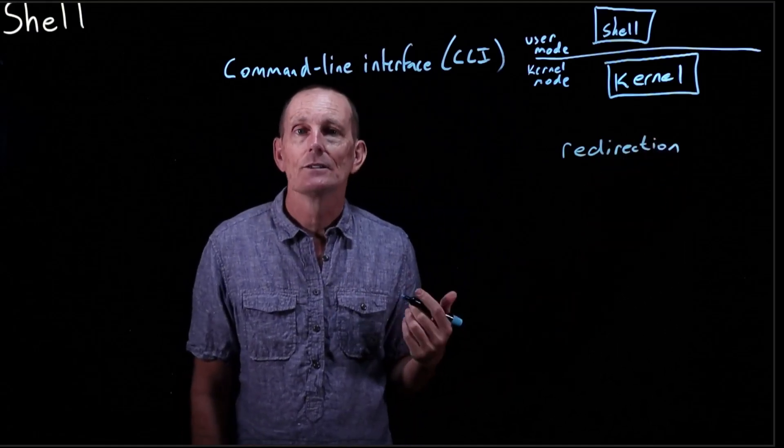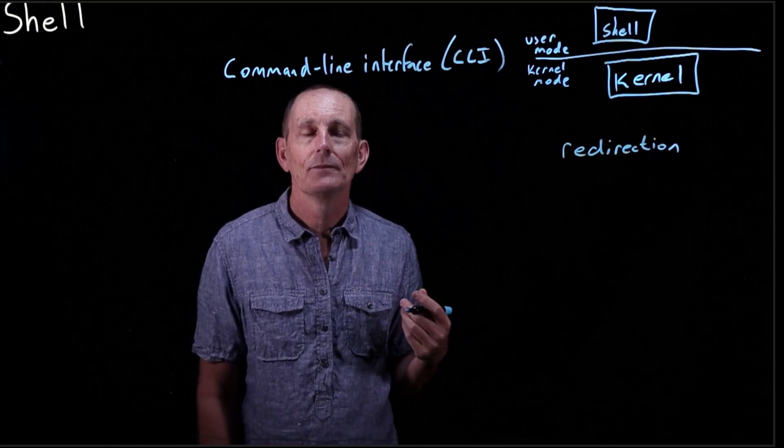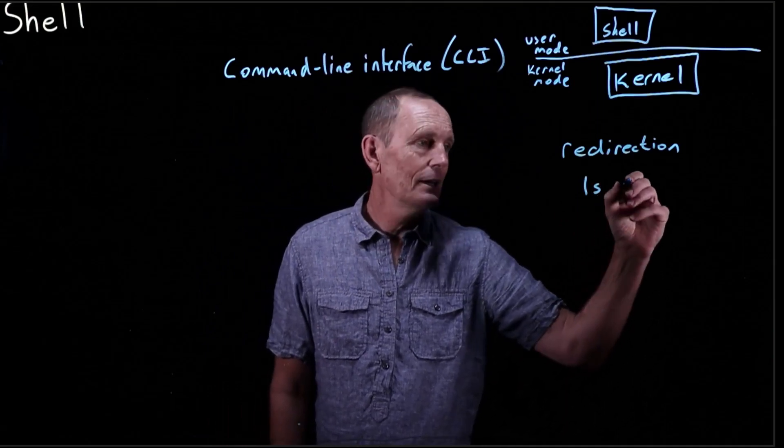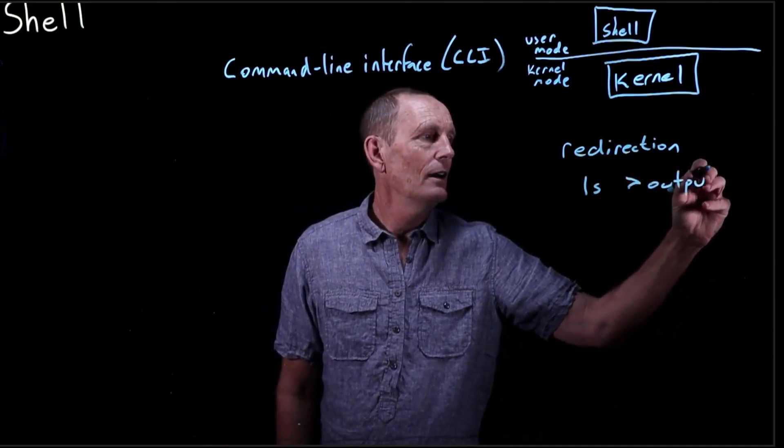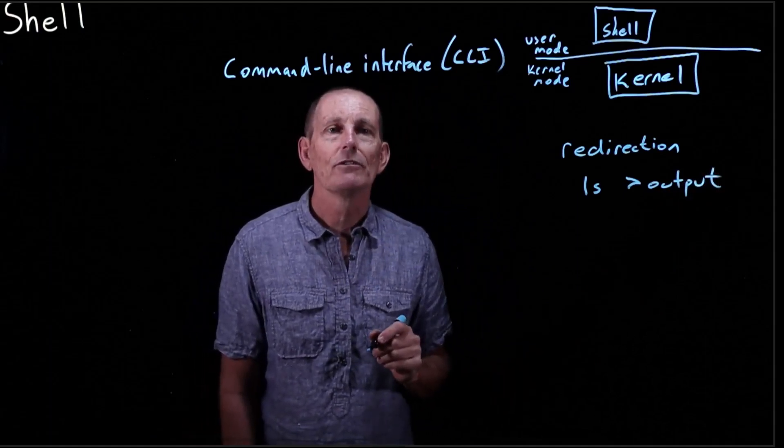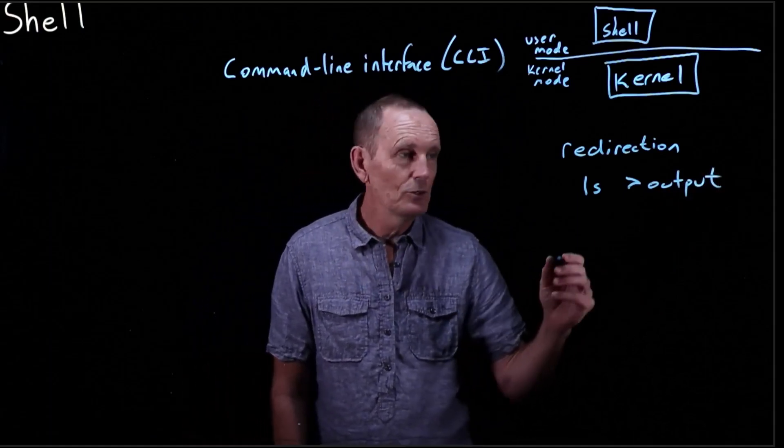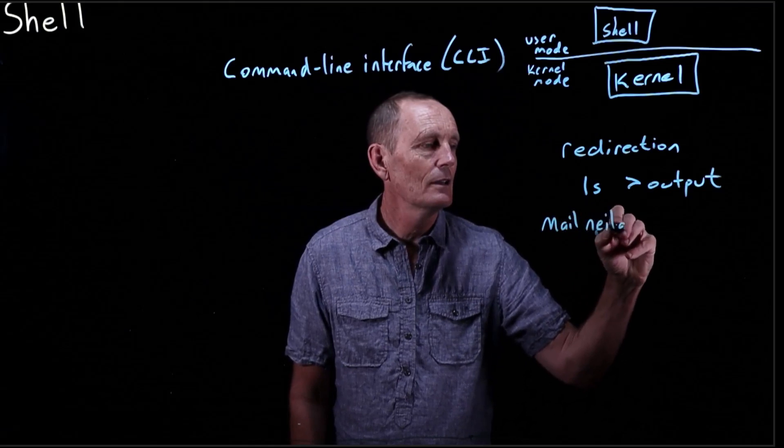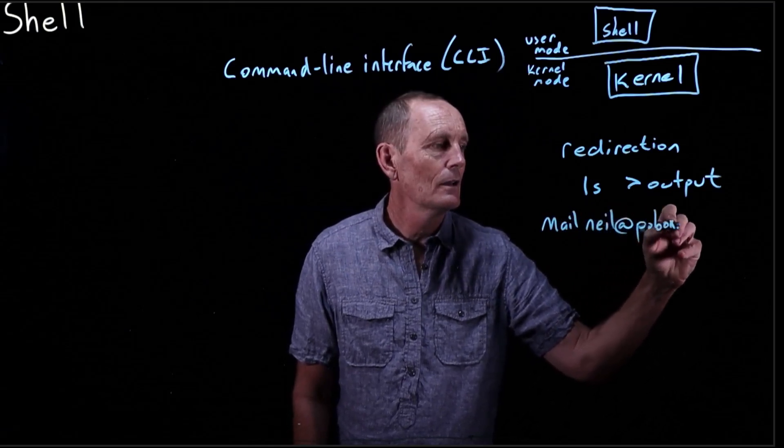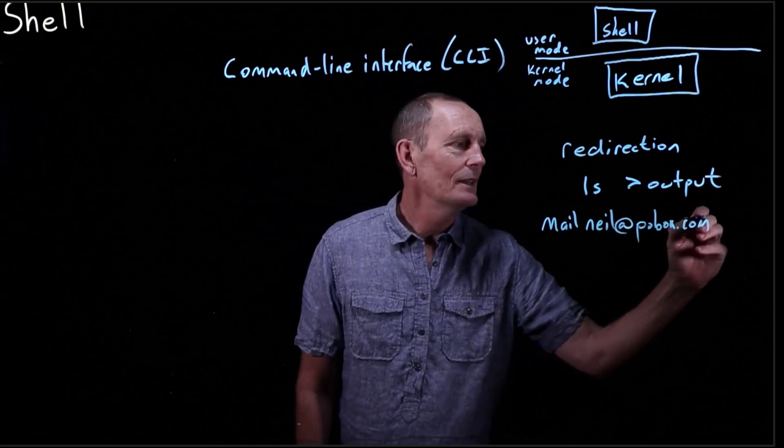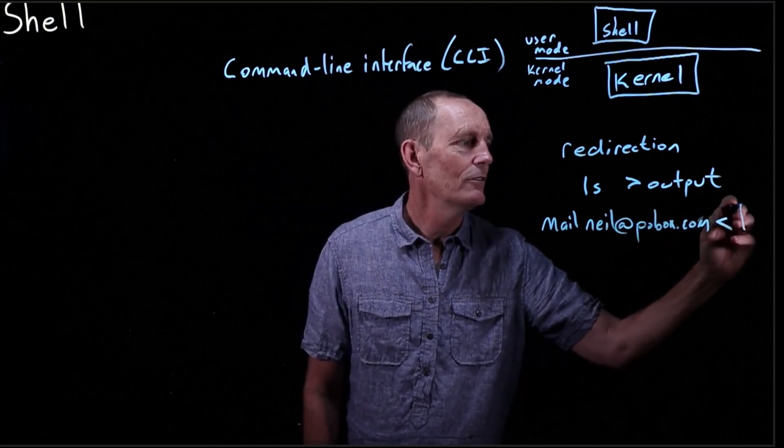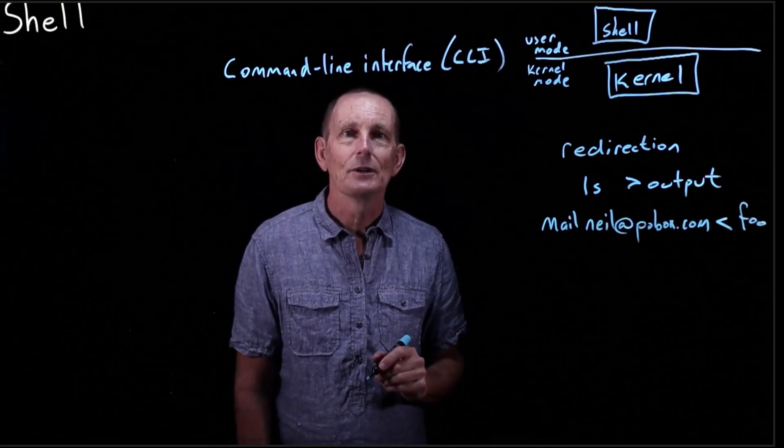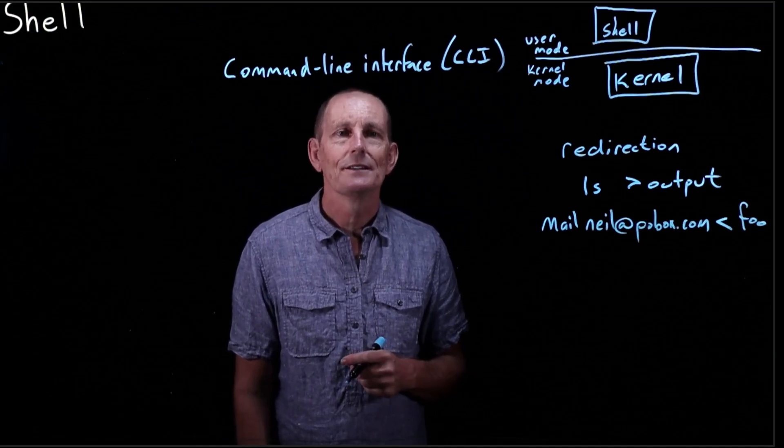So you're all probably familiar with doing an ls to find the directory listing of your current directory. You can also redirect that to a file. You can do, let's say, ls greater than, and that will take the output of ls and put it into a file called output. Or you can do redirection of input. I can do, for instance, mail mailbox.com less than foo. So that will take the contents of foo and send that as input to the mail program.